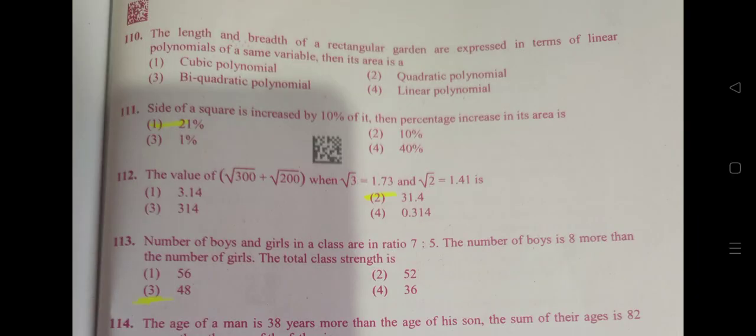Side of a square is increased by 10%, then the percentage increase in its area is 21%.